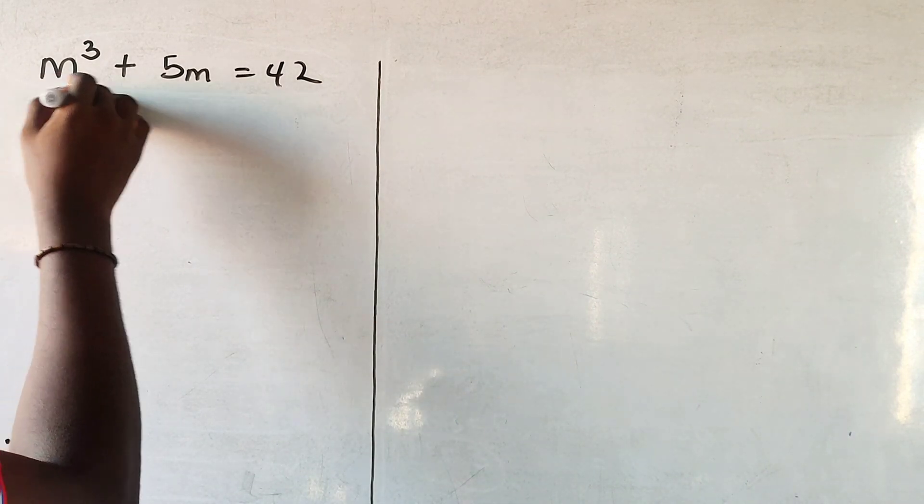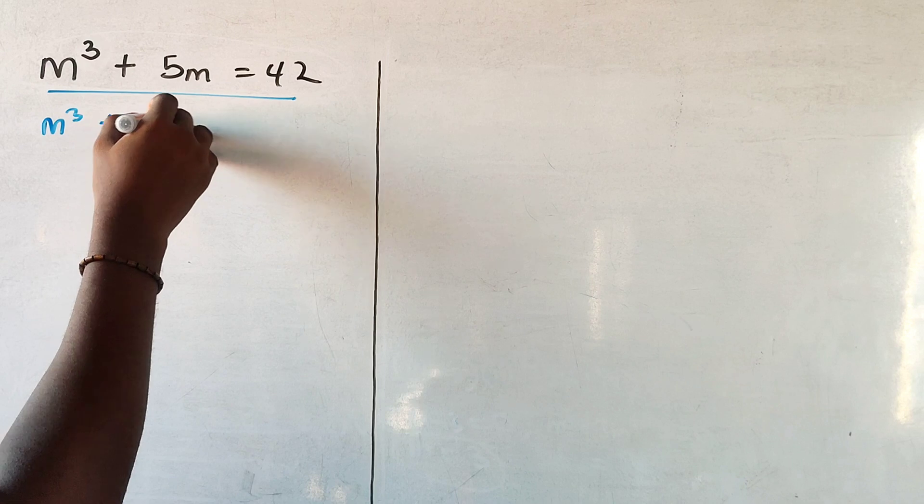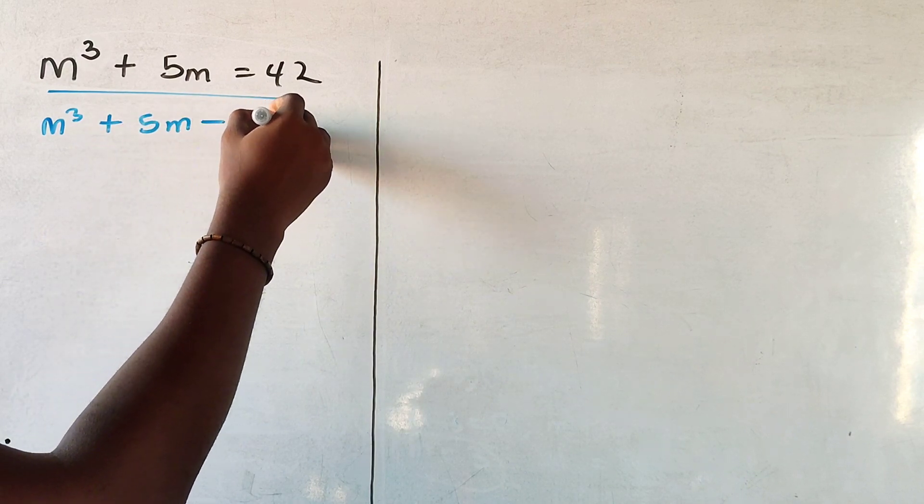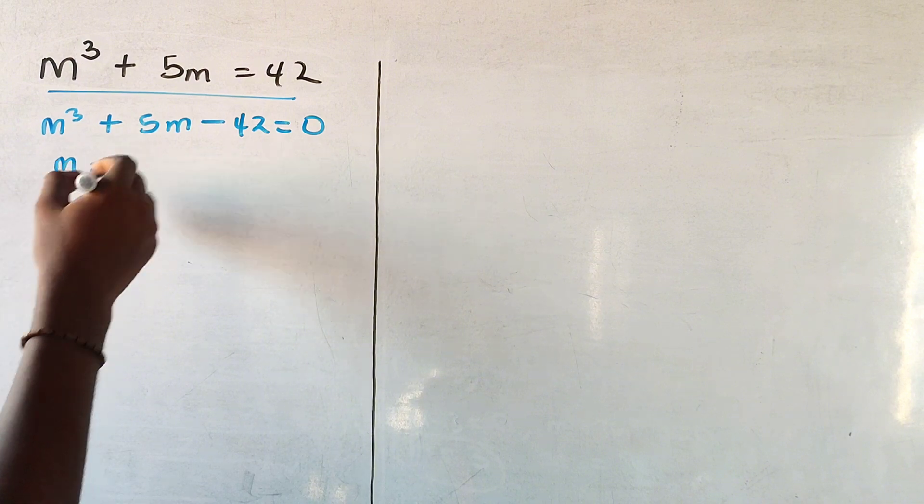Hi there, let's solve this problem. We could solve by rearranging first of all, so I have m cubed plus 5m minus 42 equals zero.